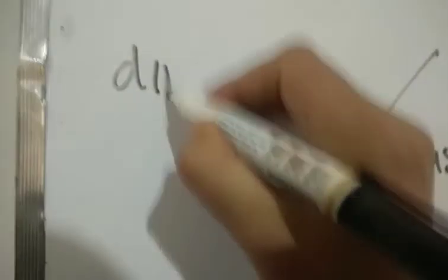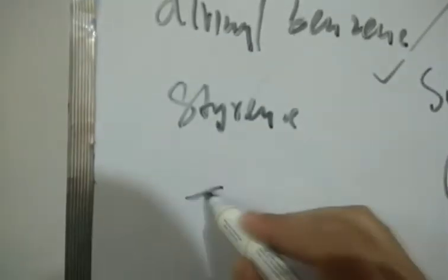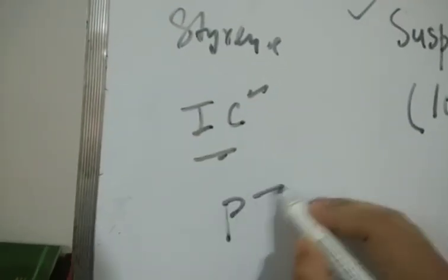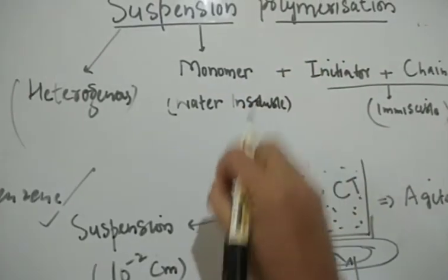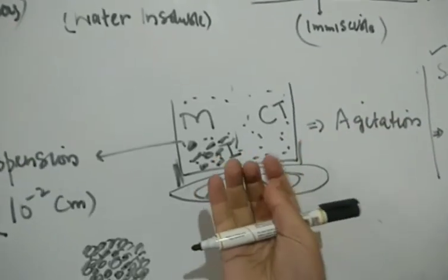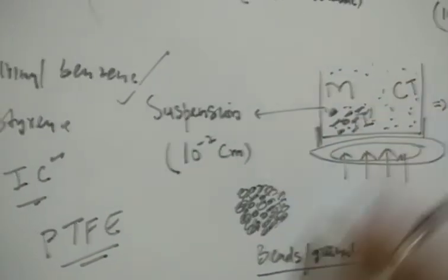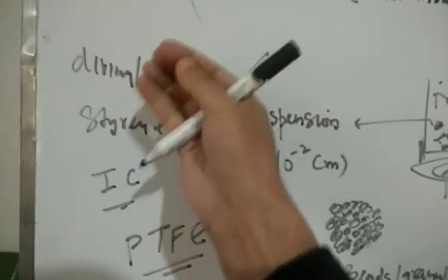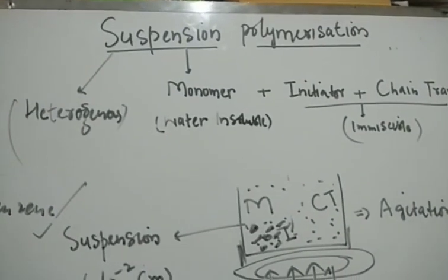This technique is usually used to prepare polymers. If you remember, we use divinyl benzene and styrene polymer in ion exchange chromatography - that is prepared through suspension polymerization. Similarly, we have polytetrafluoroethylene that is also prepared through suspension polymerization. This is all about the basics of suspension polymerization where we need water-insoluble monomer mixed with initiator and chain transfer agent which are also insoluble in water. Then you put them in the reaction vessel, agitate and heat, and you will get polymer in the form of suspension.